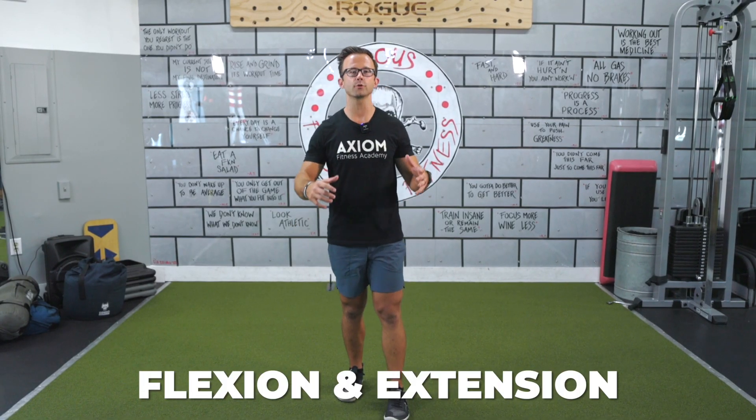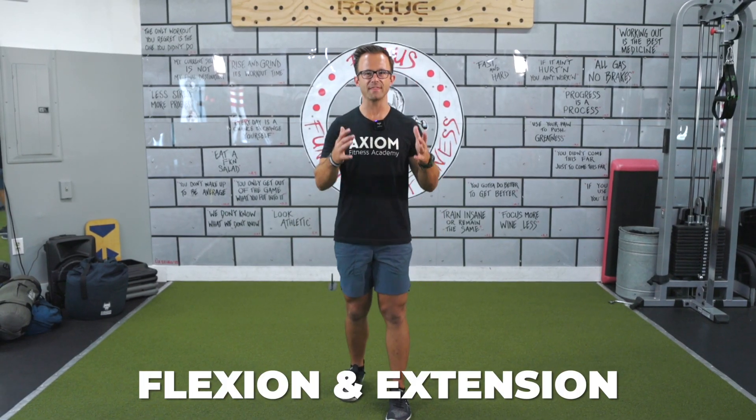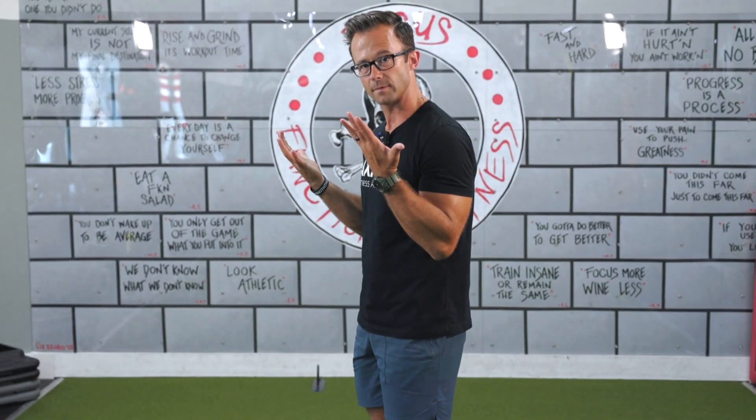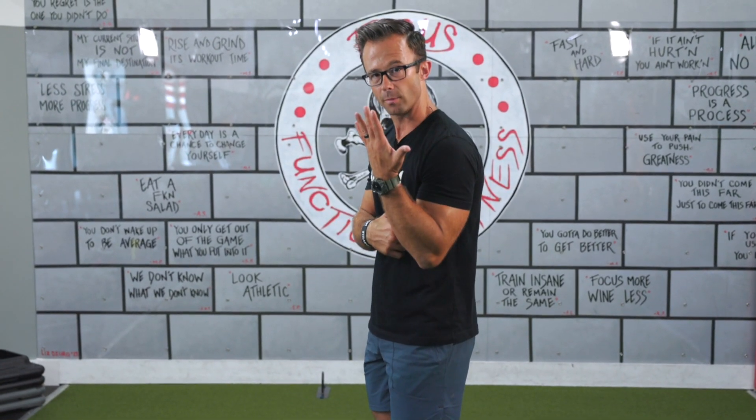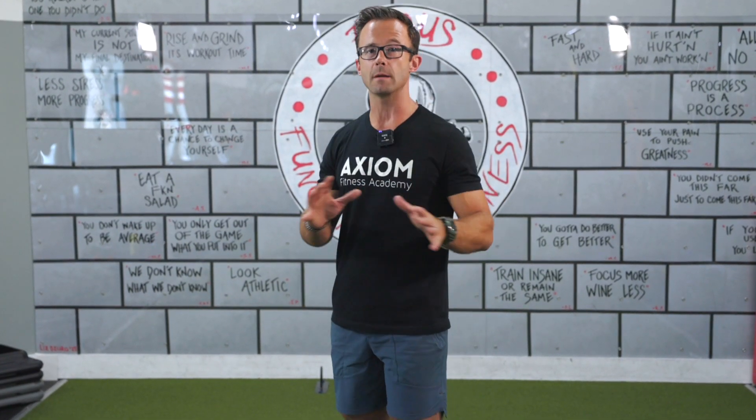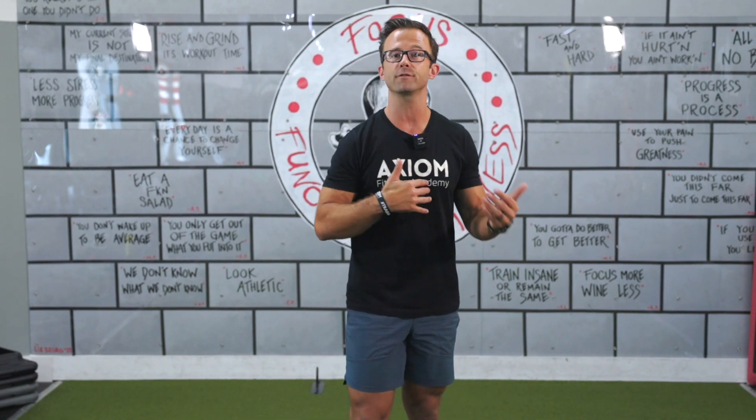One of the first motions we're going to go through is flexion and extension. Almost all flexion and extension happens in the sagittal plane — that plane that bisects the body front to back. The easiest one to start with is the elbow during a bicep curl: when you're bringing that weight up, we call that flexion at the elbow.